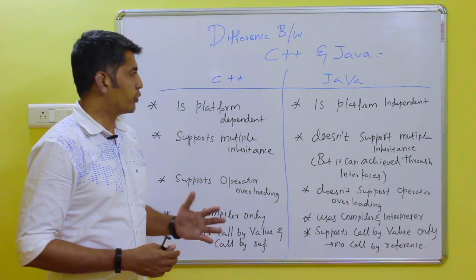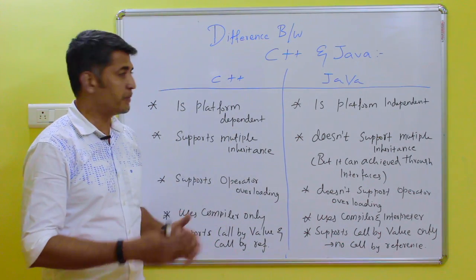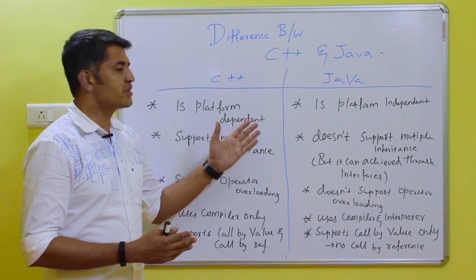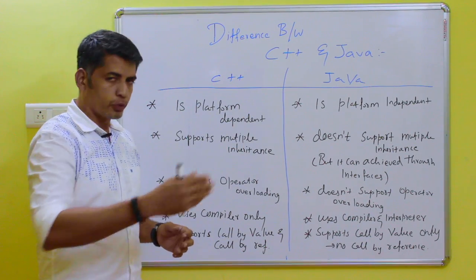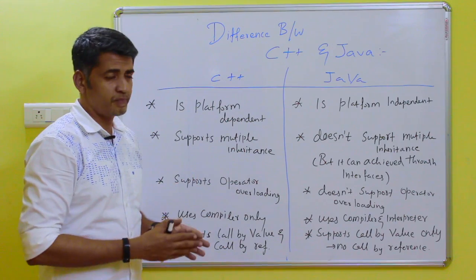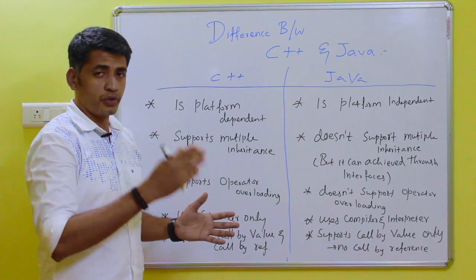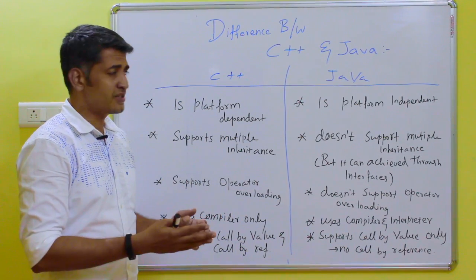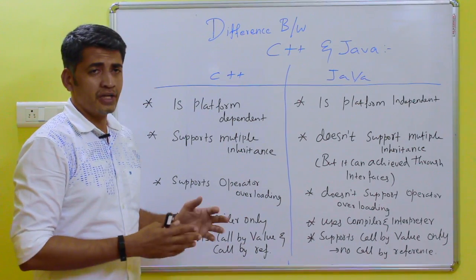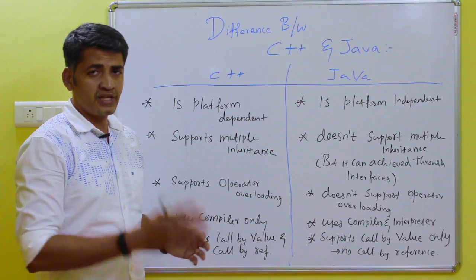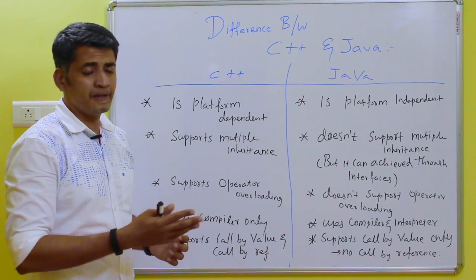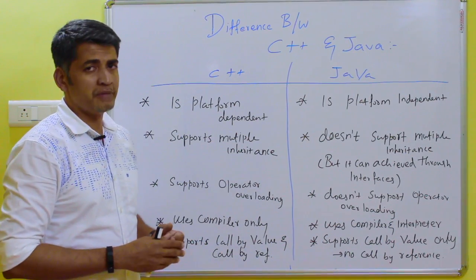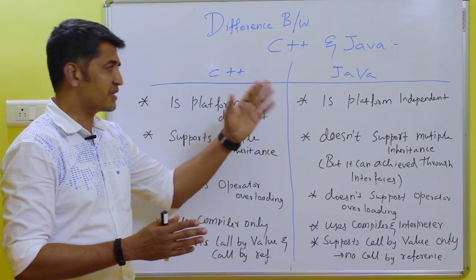Hi friends, in this video we are going to see what are the major differences between C++ and Java. In the previous video we discussed that C++ and Java are both object oriented programming languages, but C++ also supports procedural programming. For example, in C++ you can run a program without a class, but in Java you cannot run a program without a class or without a main method.